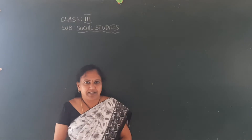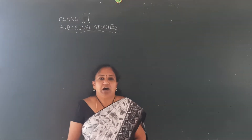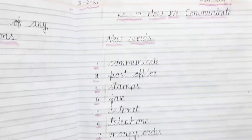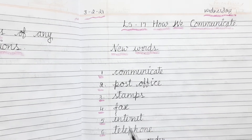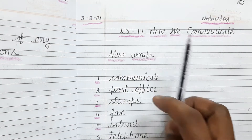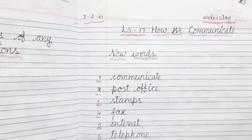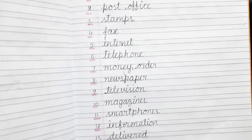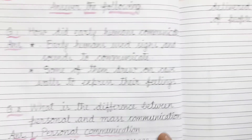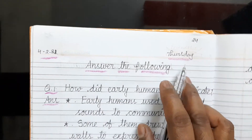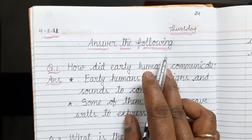Now we should start writing. Answer the following means question and answer. Students, in today's class we have completed lesson number 17 — how we communicate — textual exercises and also CW part new words completed. 13 new words I have given, everybody completed. Now everybody come to the next page and mention today's date and day, and also mention 'Answer the Following'.